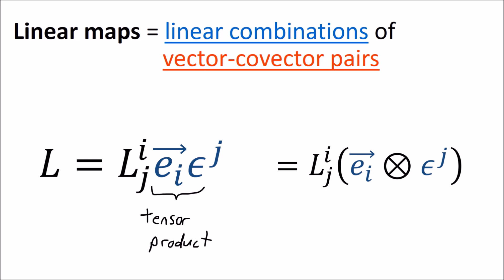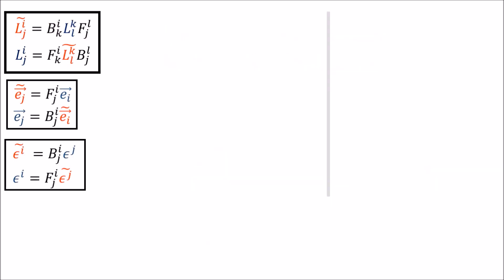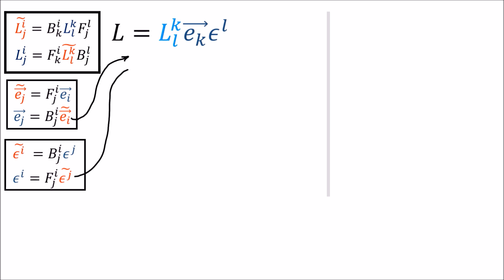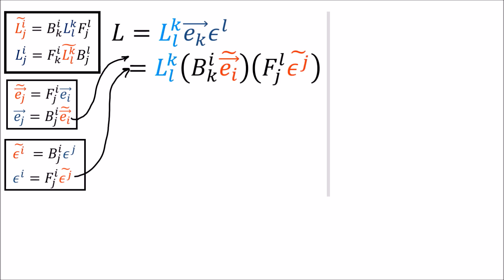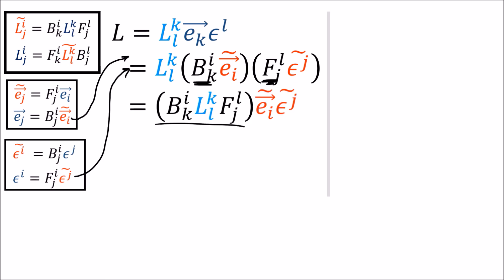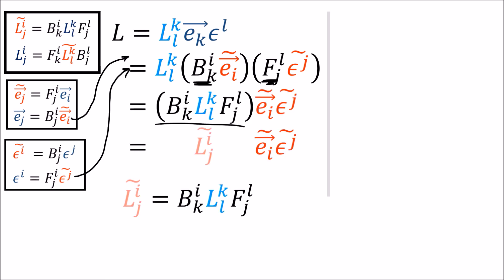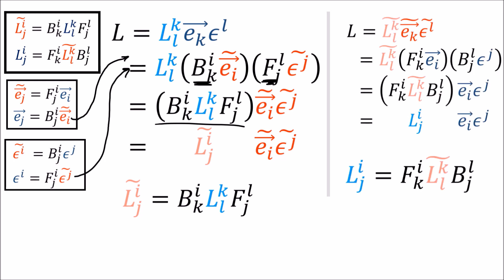This new perspective came with a lot of benefits. The first and most obvious benefit is that we didn't have to remember the linear map transformation rules anymore — we get them for free. If we write out a linear map in the old basis and want to move to the new basis, we transform the basis vectors and basis covectors individually. Basis vectors are covariant, so we use the backward transform B; basis covectors are contravariant, so we use the forward transform F. Pulling these out in front gives us the components of the linear map in the new basis.